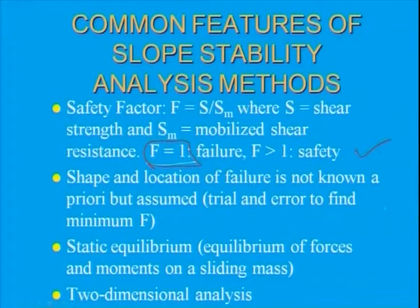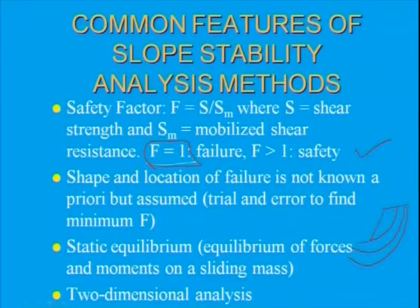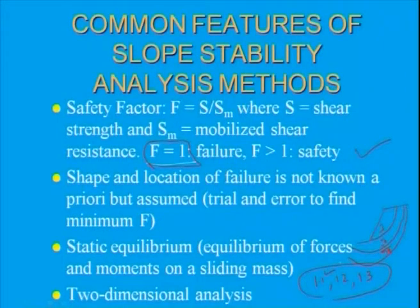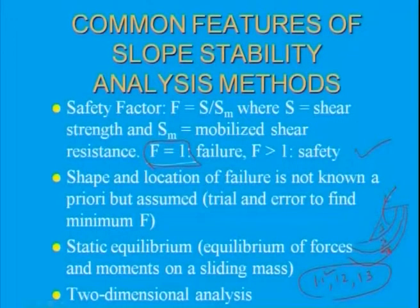Starting with a simple slope, you assume different failure surfaces. By trial and error, find the factor of safety for each assumed surface. For example, if case 1 gives FS = 1.1, case 2 gives 1.2, and case 3 gives 1.3, then the minimum factor of safety is 1.1 — that failure surface is considered the limiting failure surface.